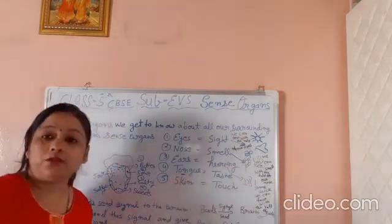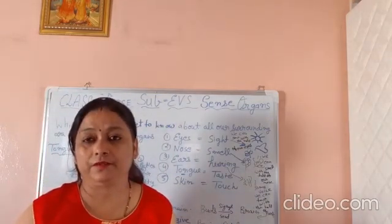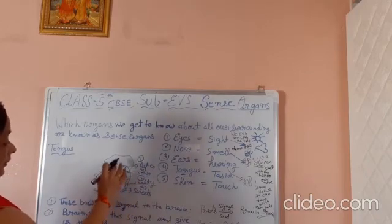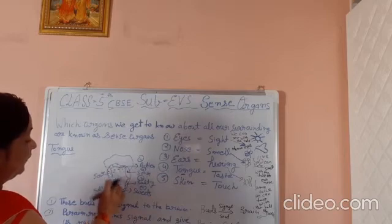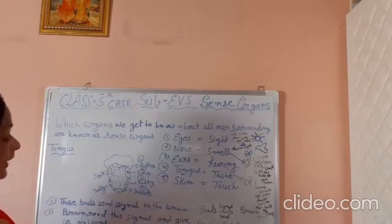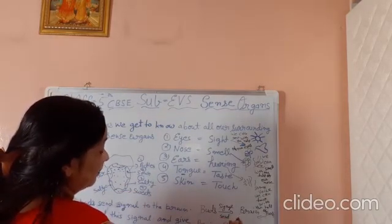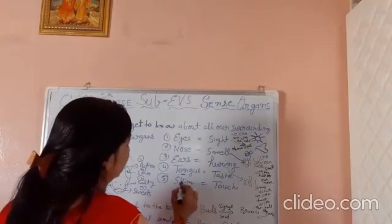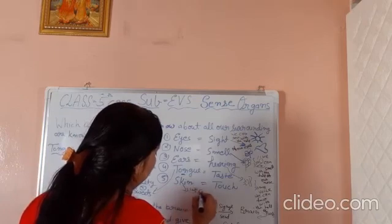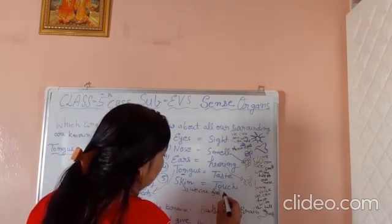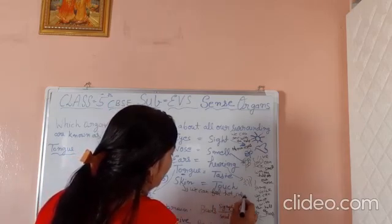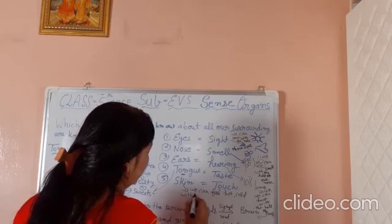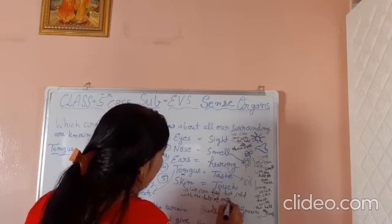Tongue helps us to feel taste. The tongue has many taste buds found in different areas of the tongue. These taste buds send signals to the brain and the brain gives us a response. And with skin, we can feel hot and cold with the help of our skin.